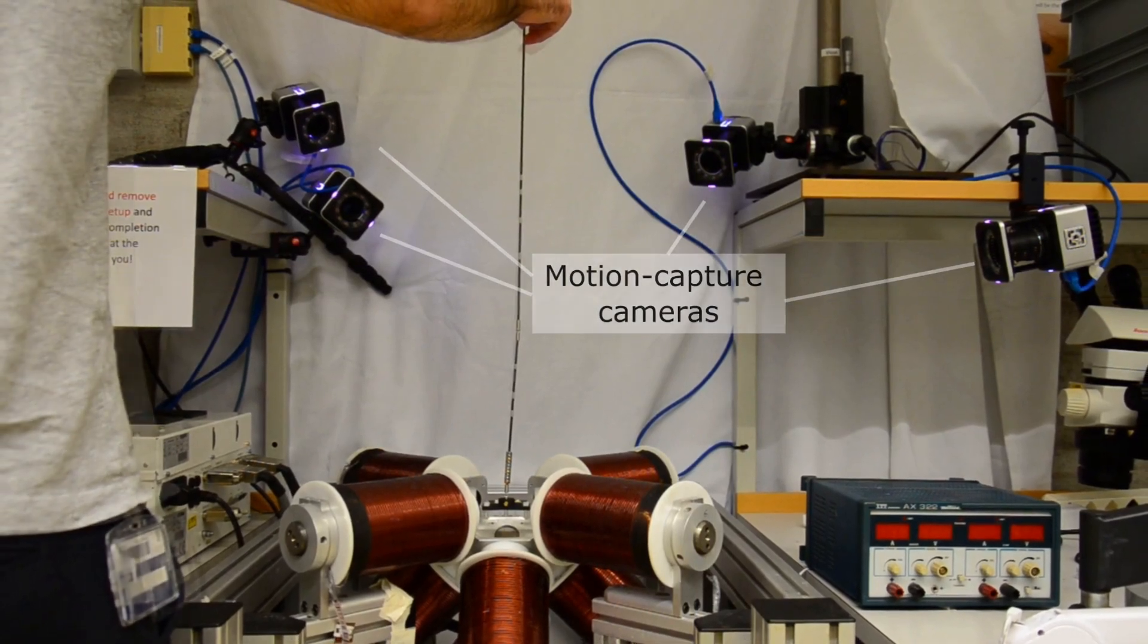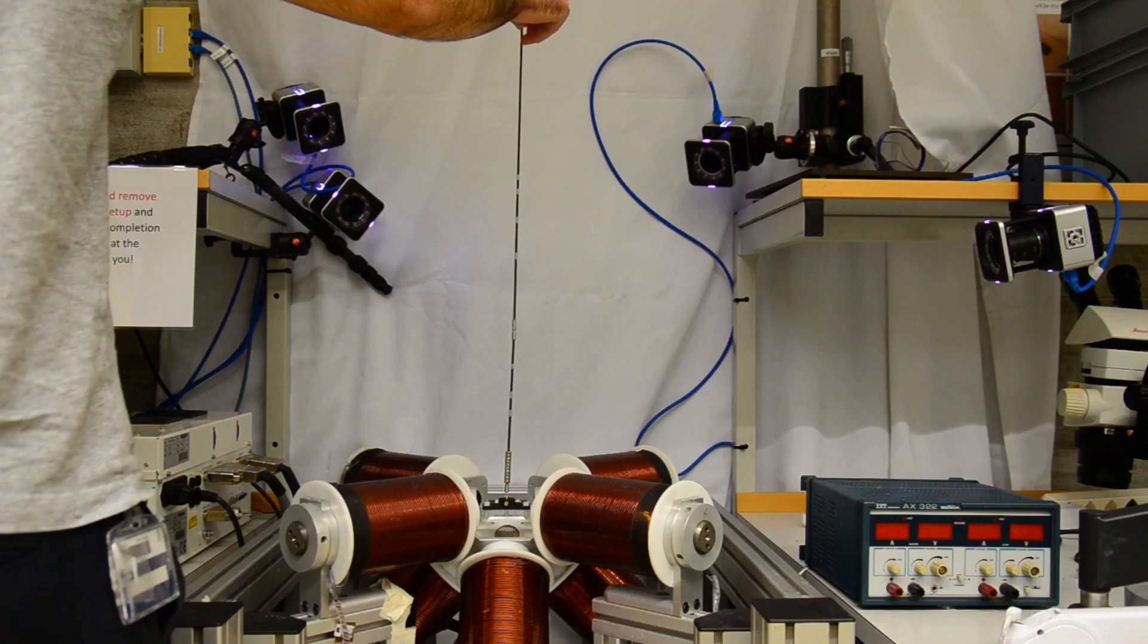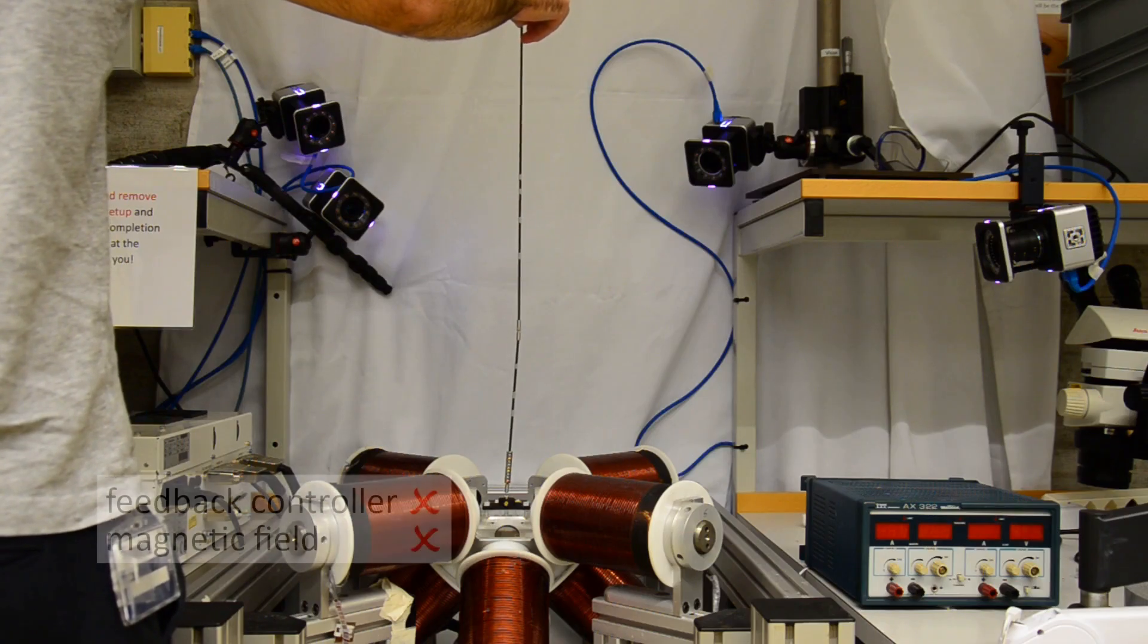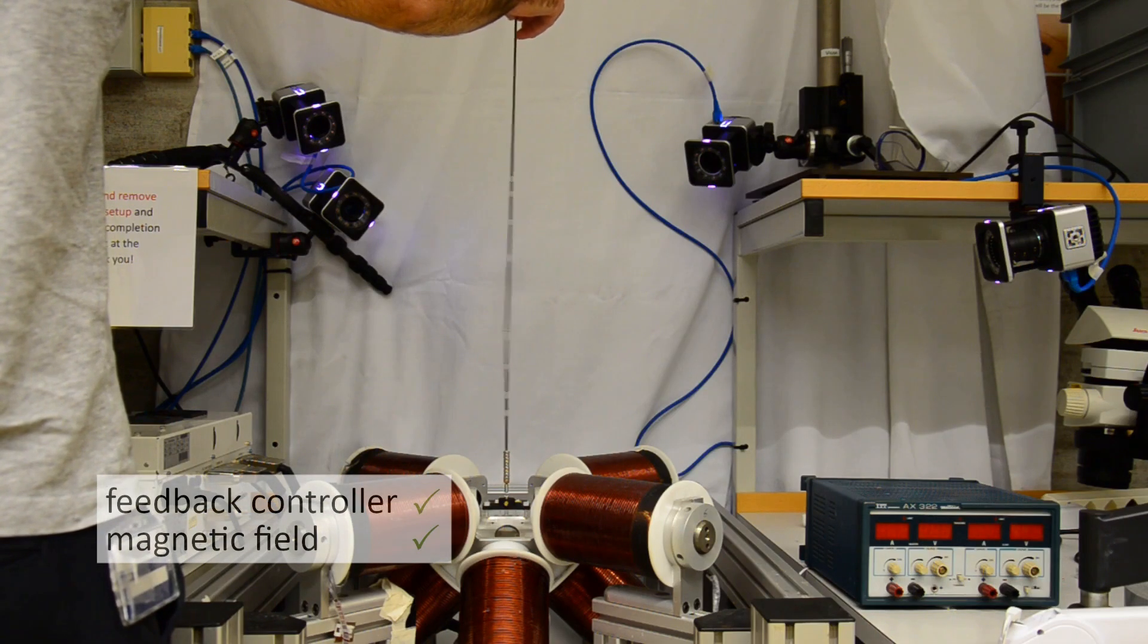So essentially the goal is to move the lower arm using the external magnetic field such that the upper pole remains balanced. Let's have a look.